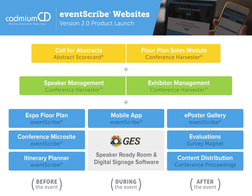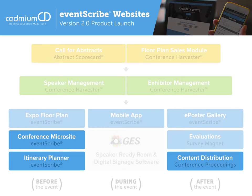So where does Eventscribe Websites fit into that? It's the three squares highlighted on this slide. Eventscribe Websites is a platform for an itinerary planner for attendees to plan what they're going to do at your event. It could be a conference microsite, the entire website for your event — not just the schedule, not just the exhibitors, but the other information you need to disseminate to attendees as they prepare to come. And lastly, it can be a conference proceedings — a mechanism to share conference materials with attendees after the event, whether it's PDF files, slides, or audio recordings synchronized with slides recorded on site.